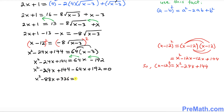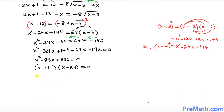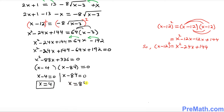This is a quadratic equation that can be factored. The factors are (x minus 4) and (x minus 84), so x minus 4 equals 0 gives x equals 4, and x minus 84 equals 0 gives x equals 84. These are our two candidate solutions.